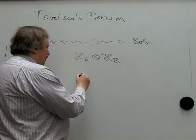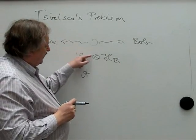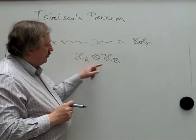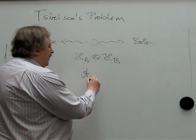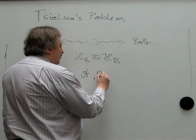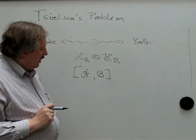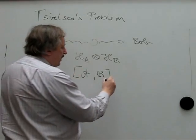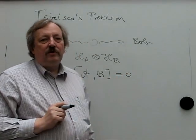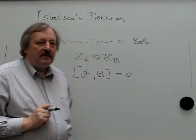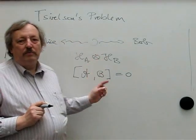The other possibility is somewhat more abstract: all the operators of Alice commute with all the operators of Bob. If we only assume that — so we have two algebras of observables that commute element-wise — we can ask a similar question. And Zirason asks whether these two maxima will be the same.